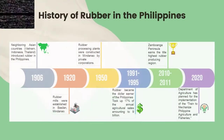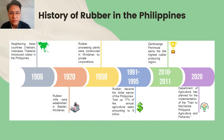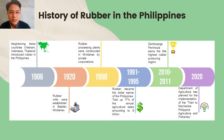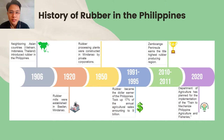In 1906, neighboring Asian countries such as Vietnam, Indonesia, and Thailand introduced rubber to the Philippines. In 1920, rubber mills were established in Basilan, Mindanao. In the 1950s, rubber processing plants were constructed in Mindanao by private corporations. In 1991 to 1995, rubber became the top dollar earner in the Philippines, taking up 70% of annual agricultural sales amounting to $9 billion. In 2010 to 2011, the Zamboanga Peninsula earned the title of highest rubber producing region. By 2020, the Department of Agriculture started planning for the implementation of trained-to-mechanized Philippine agriculture and fisheries.